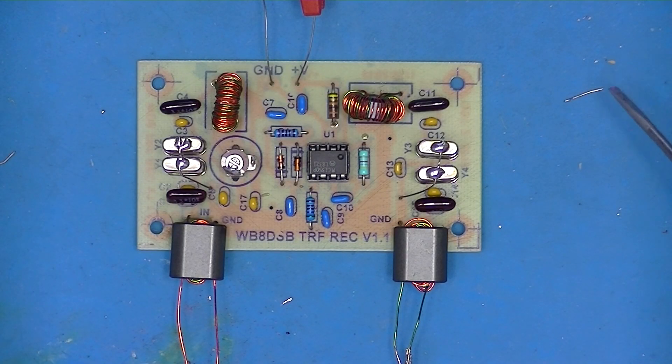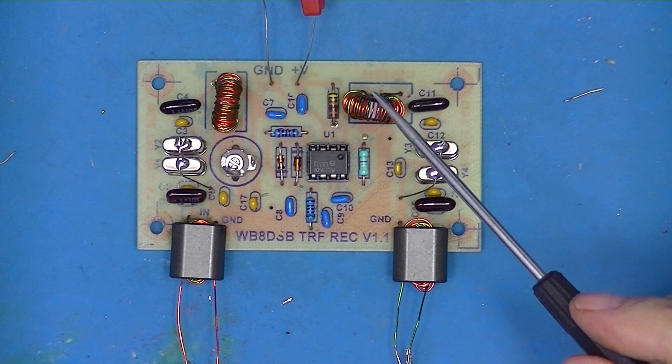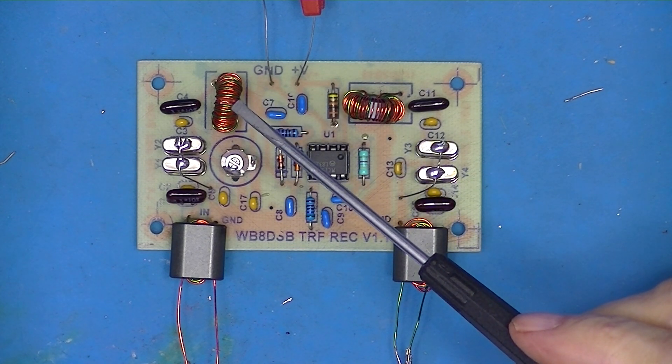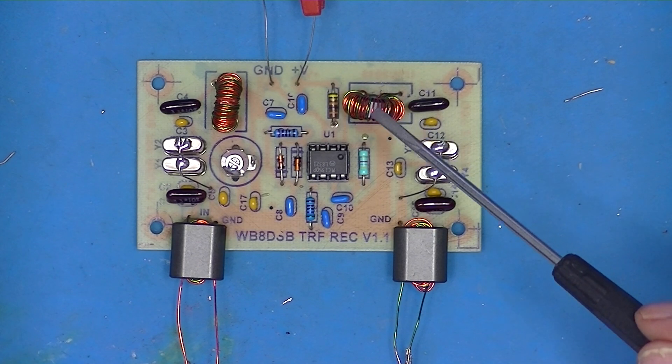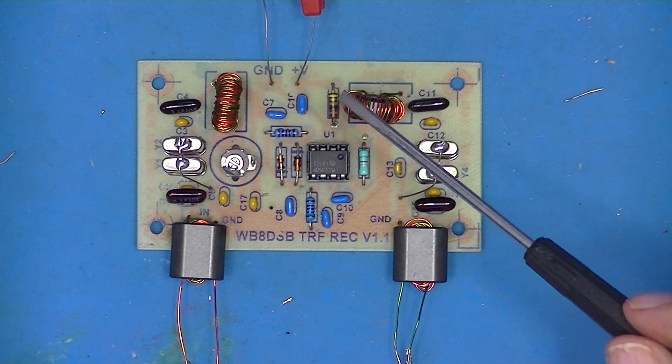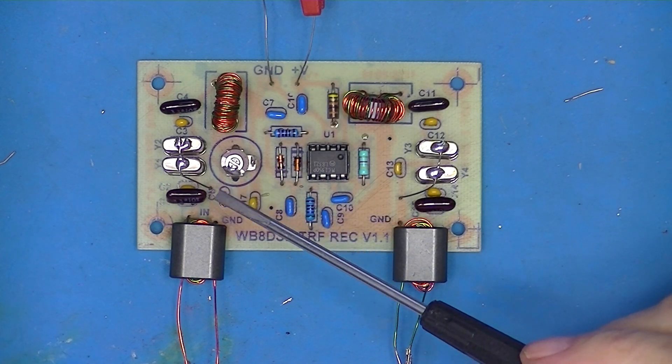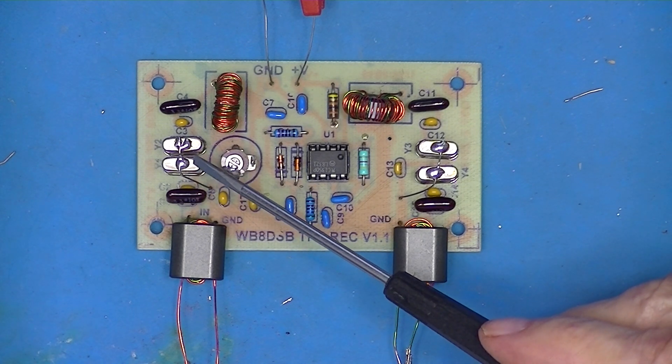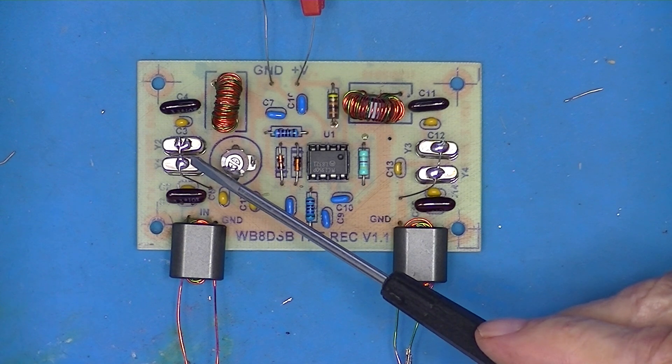I finished the 5 megahertz version of the receiver. It looks very much like the 10 megahertz version. There's two transformers, same as on the 10 megahertz. I did have to substitute some silver mica capacitors. I've got the correct crystals.